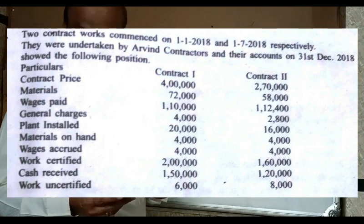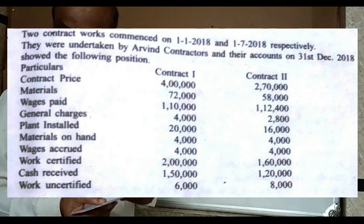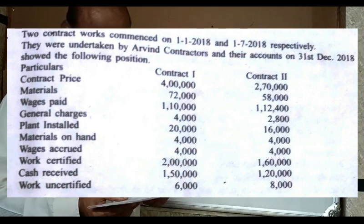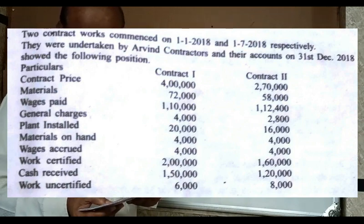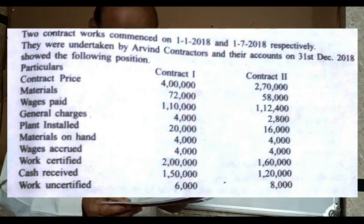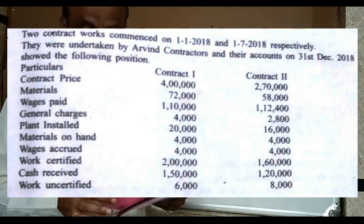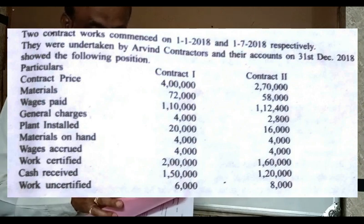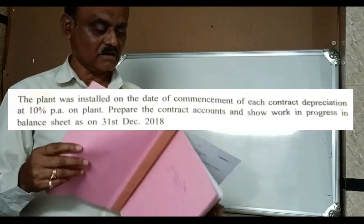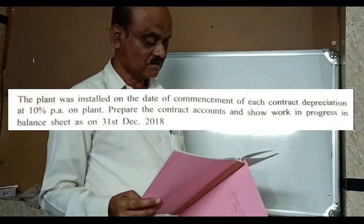Wages outstanding: one lakh ten thousand and one lakh twelve thousand four hundred. General charges: four thousand and two thousand eight hundred. Plant installed: twenty thousand and sixteen thousand. Material on hand: four thousand and four thousand. Work certified: first contract two lakhs, second contract one lakh sixty thousand. Cash distributed: one lakh fifty thousand and one lakh twenty thousand. Work uncertified: sixty-six thousand and eight thousand.